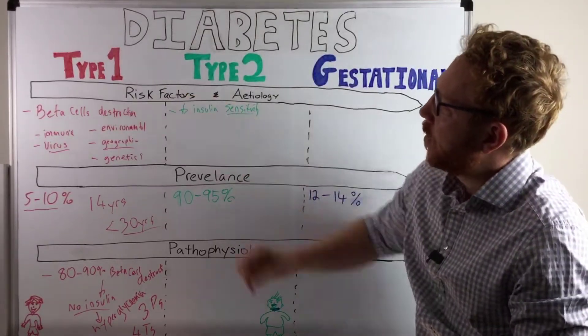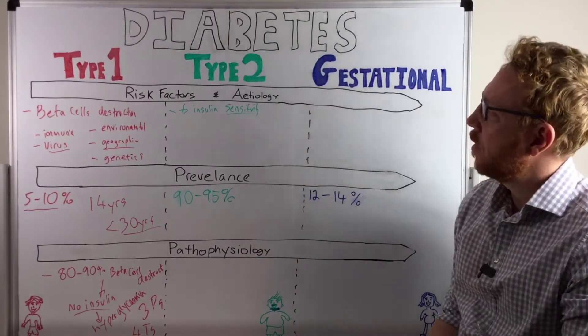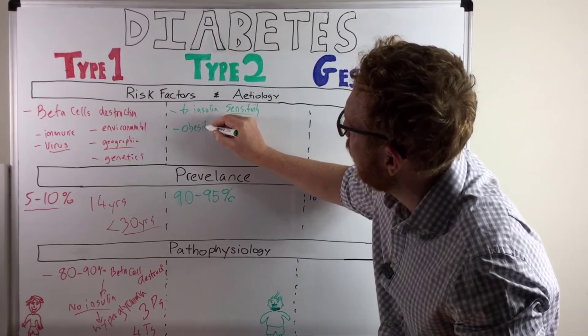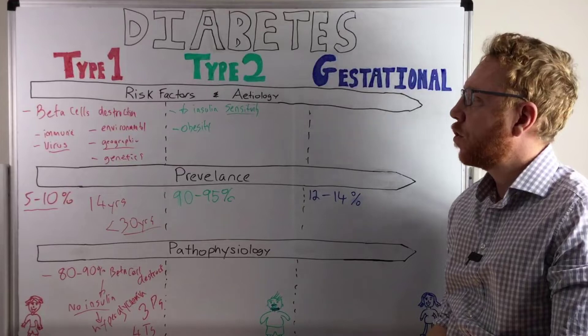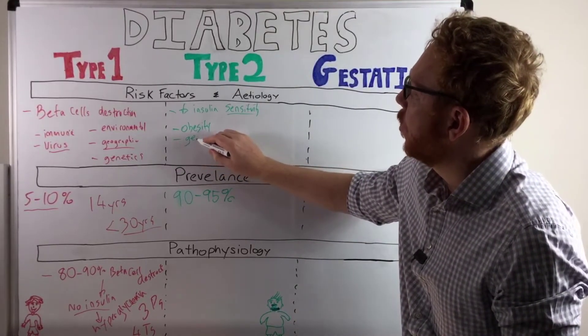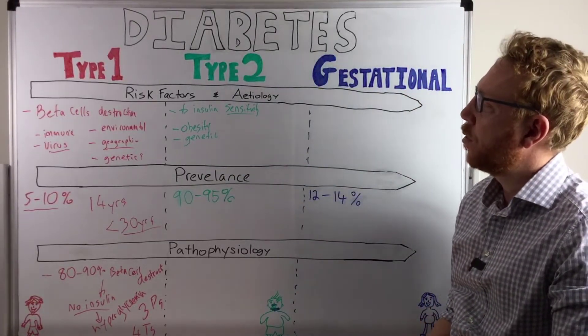In these individuals they seem to be less sensitive to it. Now this would then lead to the risk factors. What are the risks that would increase the person to be less sensitive to it? Well one of the strongest by far is obesity. So obesity is probably the strongest, if not behind genetics. So these two would be probably the highest risks for developing type 2 diabetes.